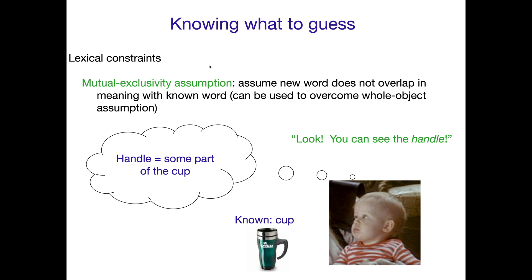Another constraint that children have when they're trying to figure out the meaning of a new word — a lexical word — is something called the mutual exclusivity assumption. This is basically assuming that a new word does not overlap in meaning with a known word.